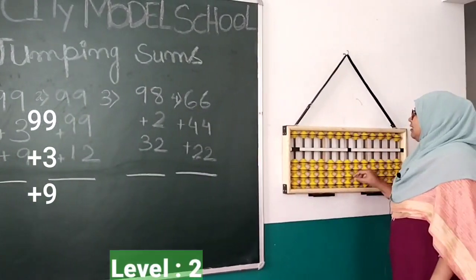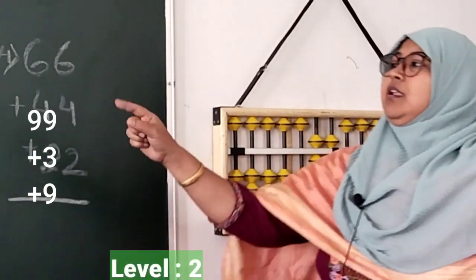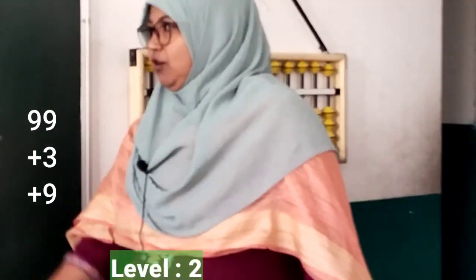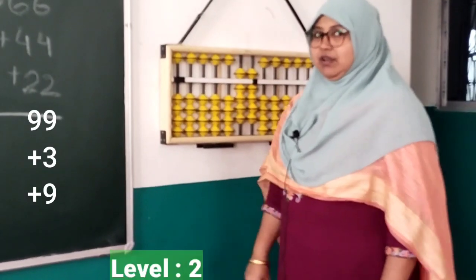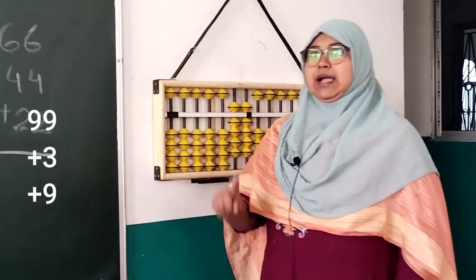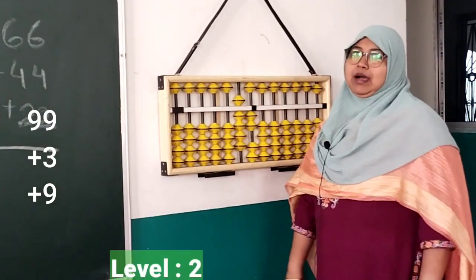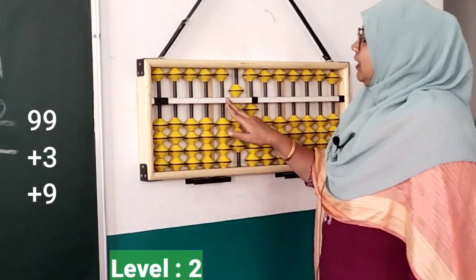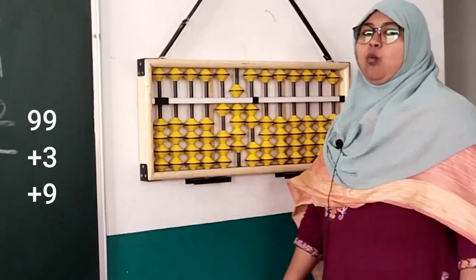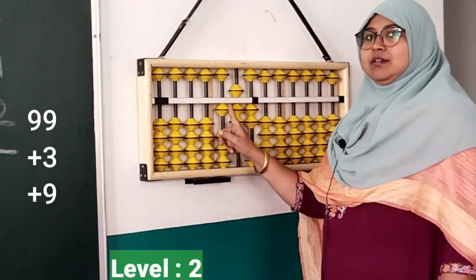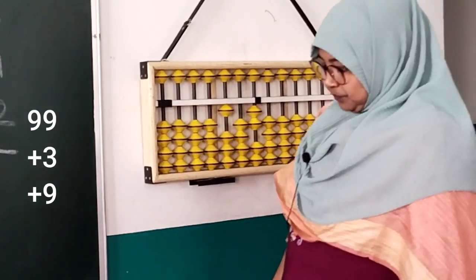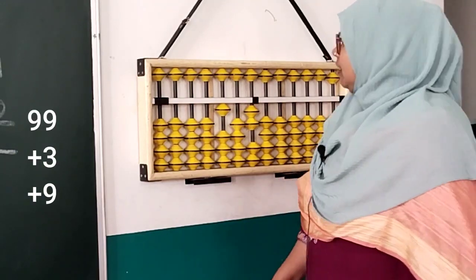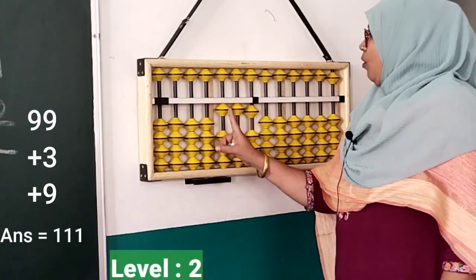First we do ninety-nine directly. Then plus three — we don't have beads in our ones place, so we use the best friend of three, which is seven. The formula for plus three is: minus seven plus ten. We can do minus seven, but we don't have beads in our tens place to do plus ten, so we jump from the ones place directly to the hundreds place and put up one. But this is not ten, this is one hundred, so we skip ninety. Then plus nine — the friend of nine is one — so minus one plus ten. The answer is one hundred eleven.